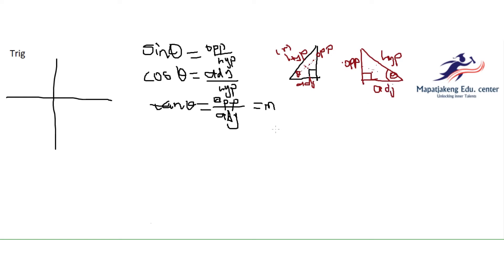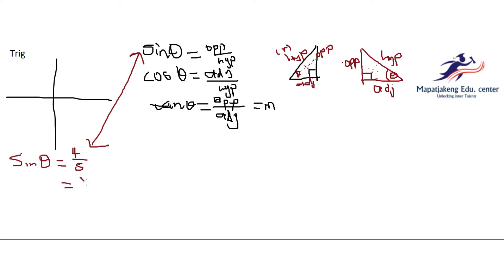Alright, I hope that's clear and simplified enough. Let's say you are given sine of angle theta equals four over five. Looking at this, you can easily tell that your opposite side is going to be equal to four and your hypotenuse side is going to be equal to five. The only side you don't have is your adjacent side, so you need to calculate it.